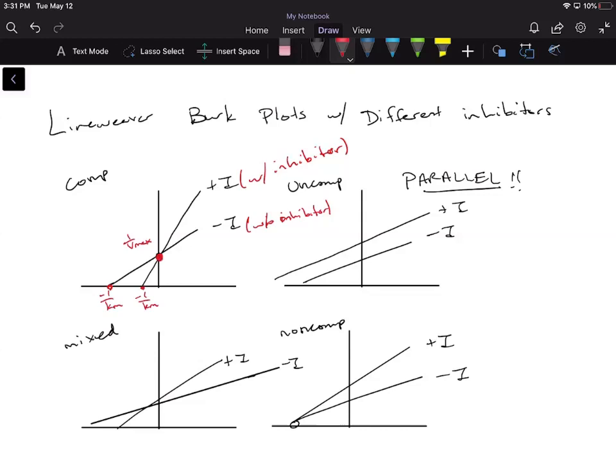So looking at this right over here, we're going to see that our Vmax, well, if it goes through the same point, it means that you have the same Vmax value. So that means when I added the inhibitor, the Vmax didn't change.